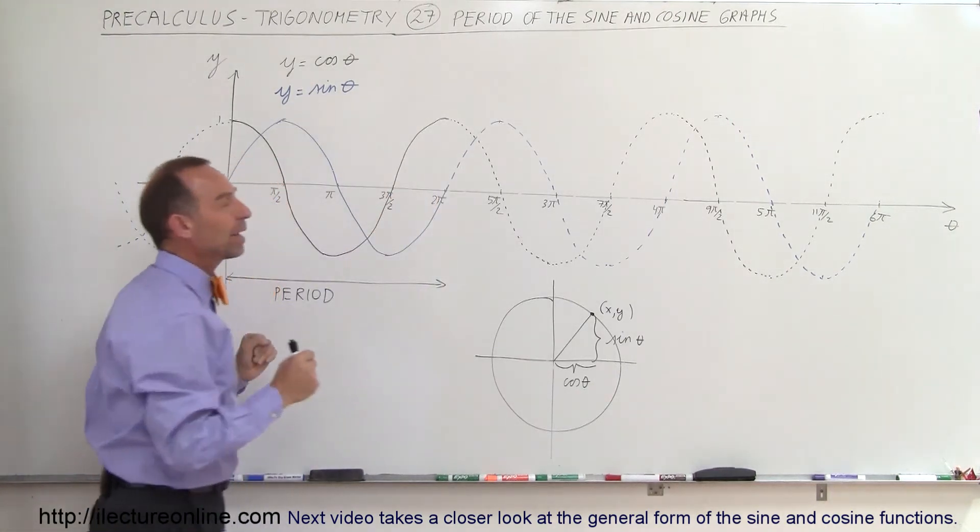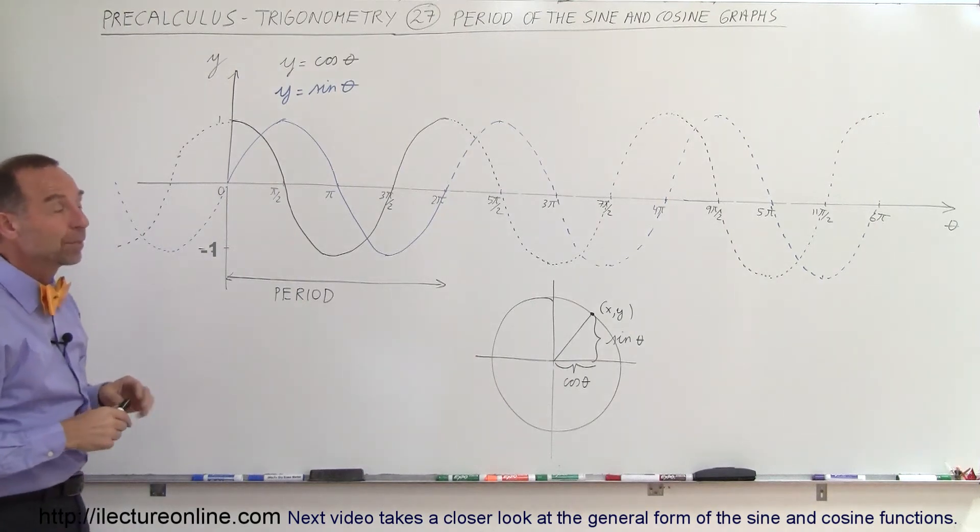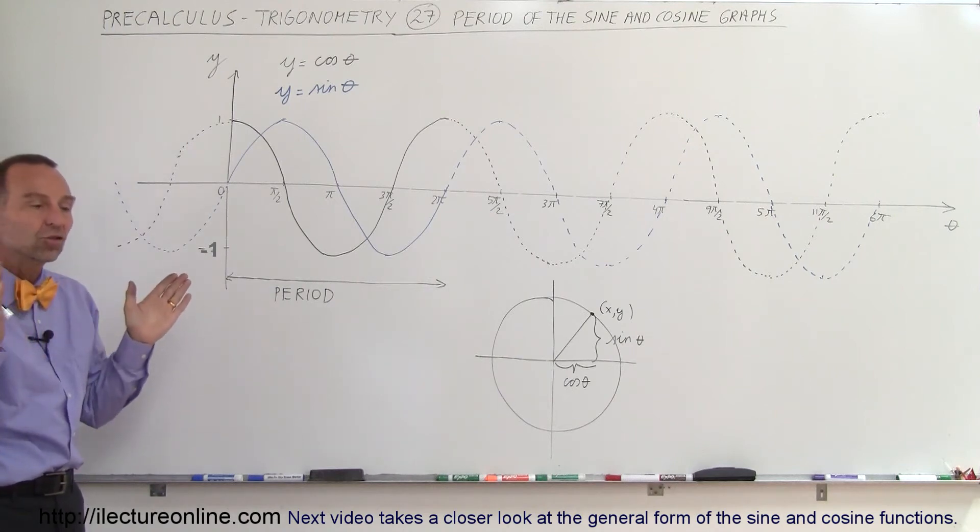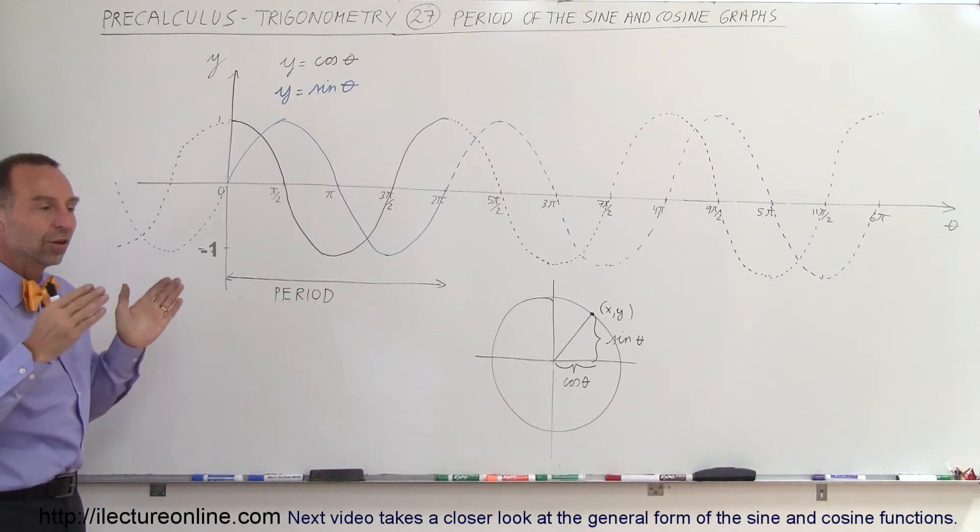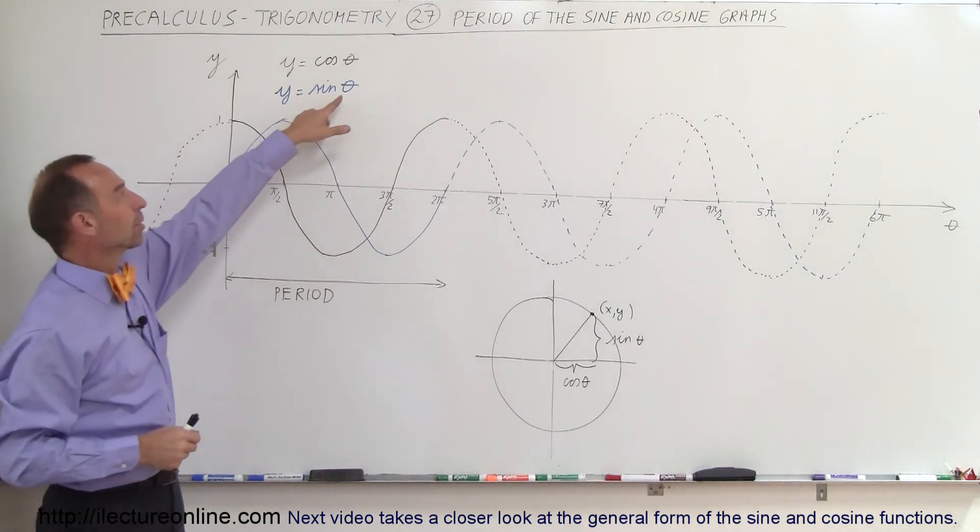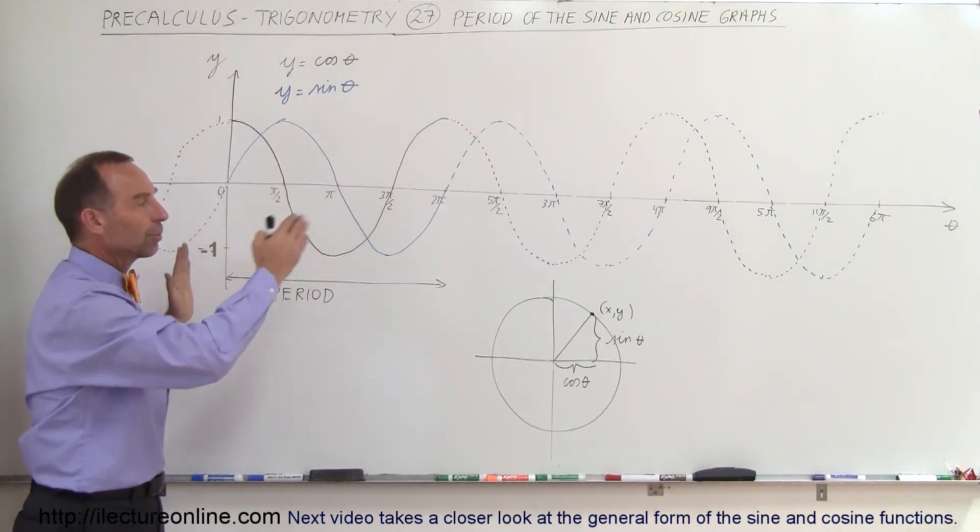That's typically how it's done, although in the next video we'll see that there's a more general way of writing these functions where the periodicity can change as far as the length on the horizontal axis, because the angle here can be written differently which causes the periodicity to change.